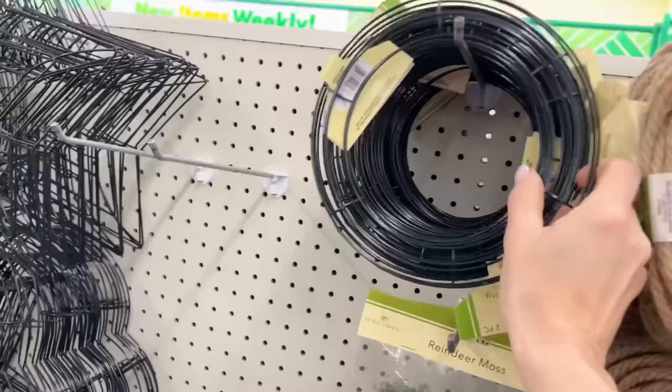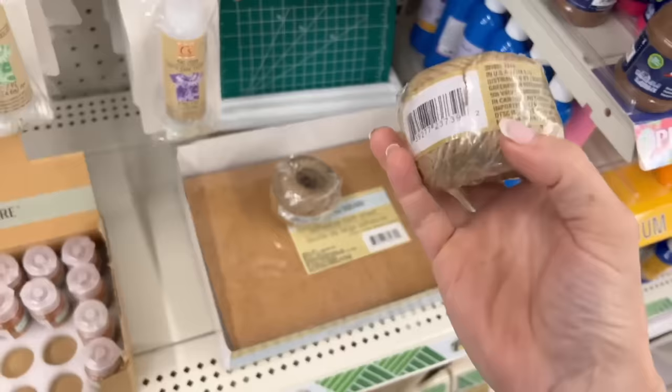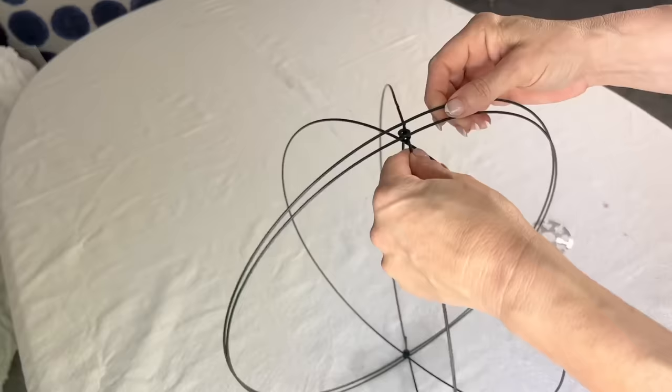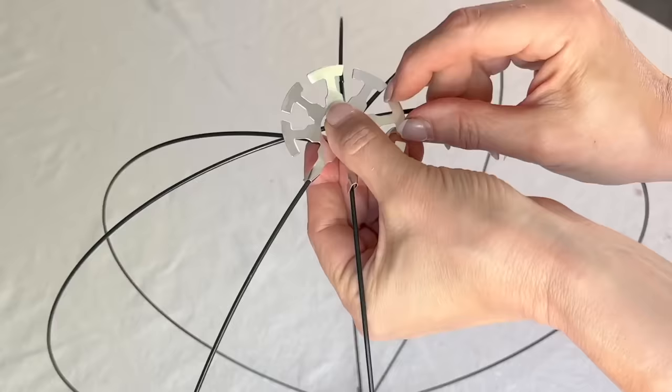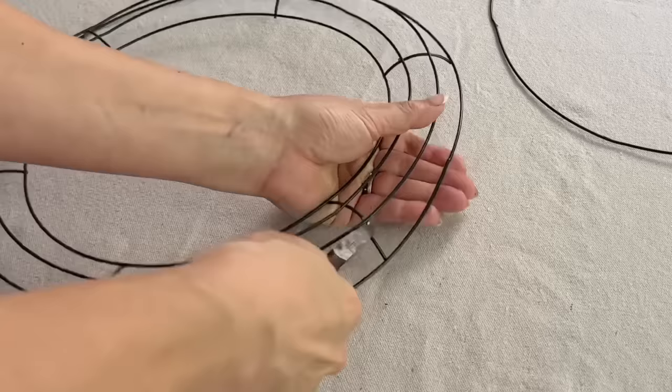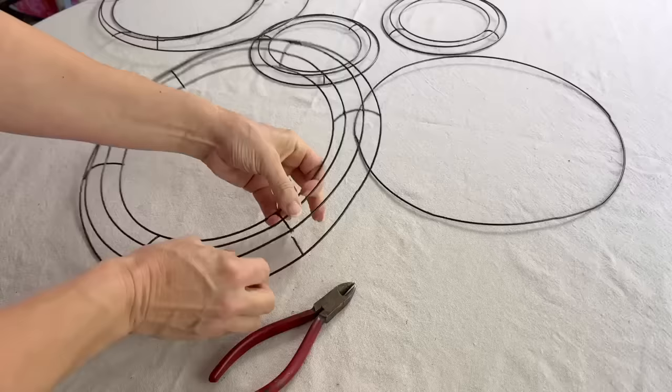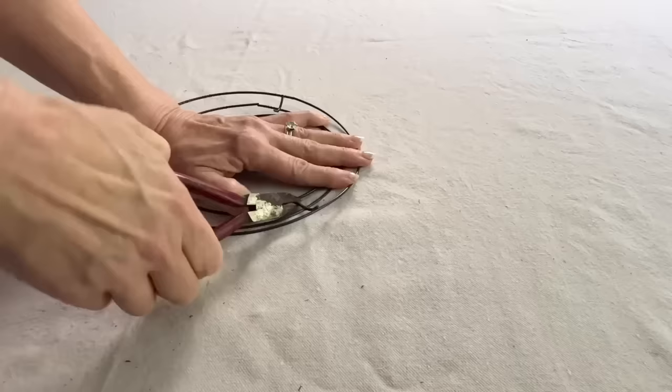Next time you're at the Dollar Store, grab a large wreath form, two small wreath forms, and one 3D wreath form. Assemble the 3D wreath form according to the instructions. Start to cut the wire rings from each other on the large wreath form and the two small wreath forms.